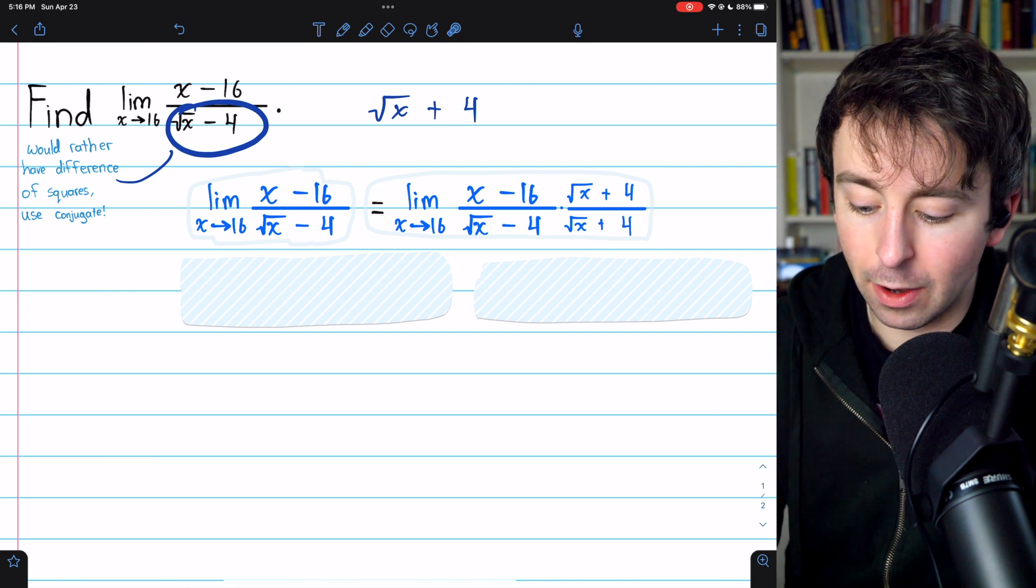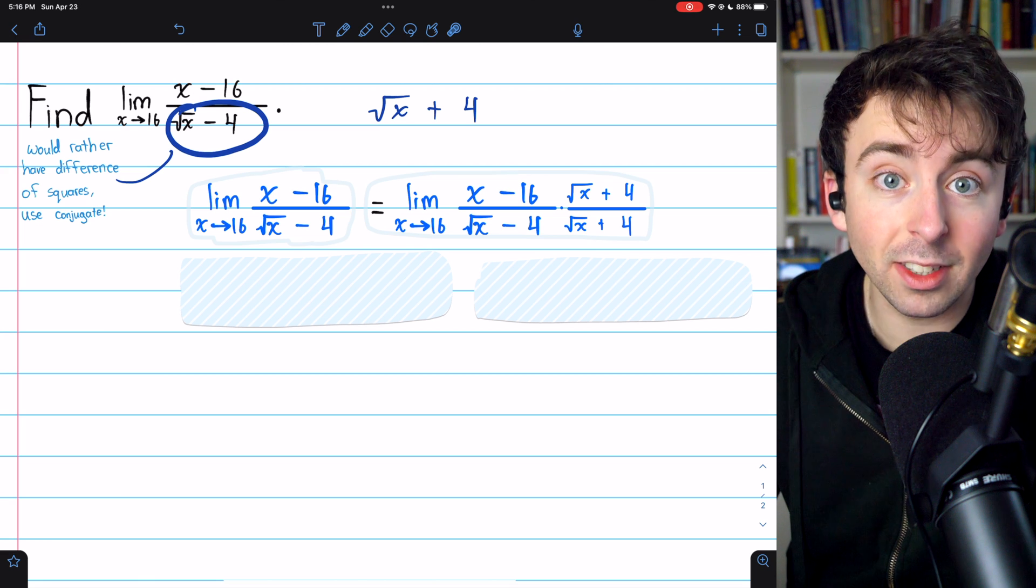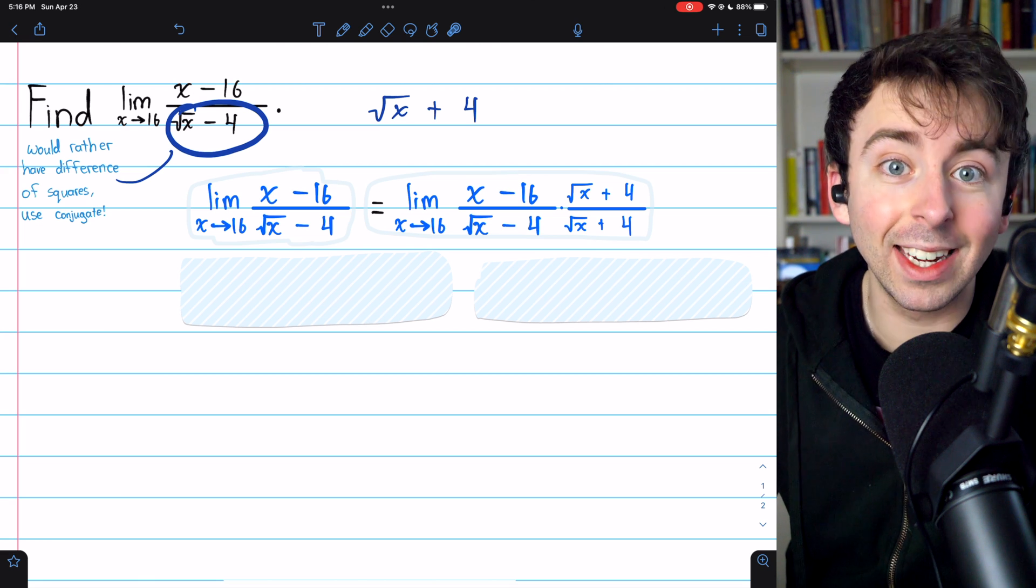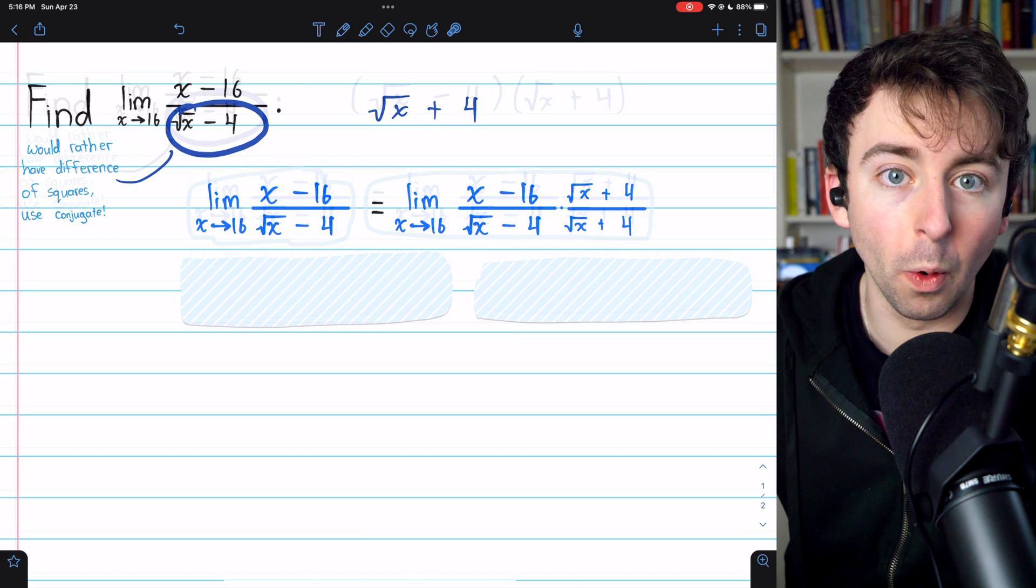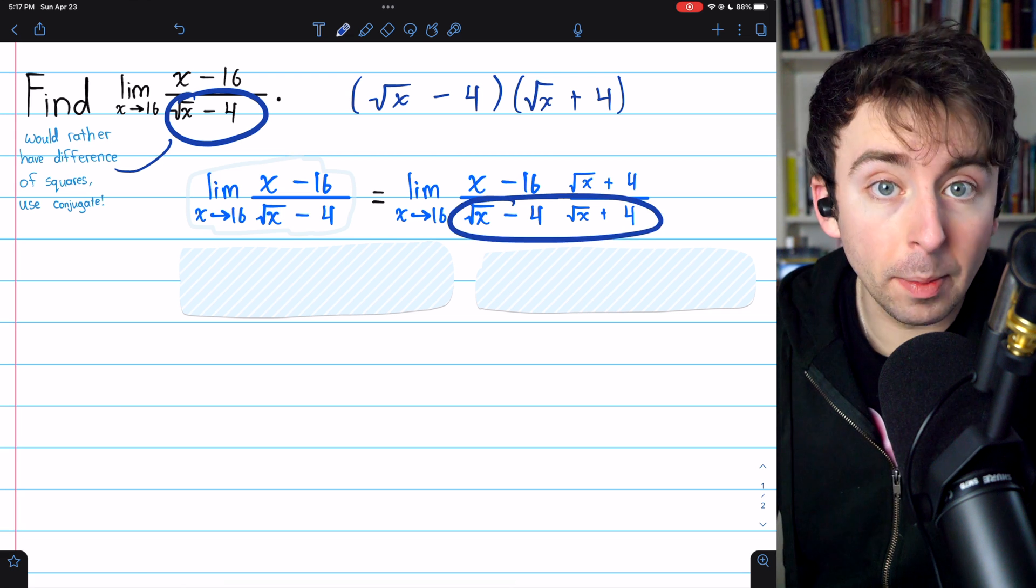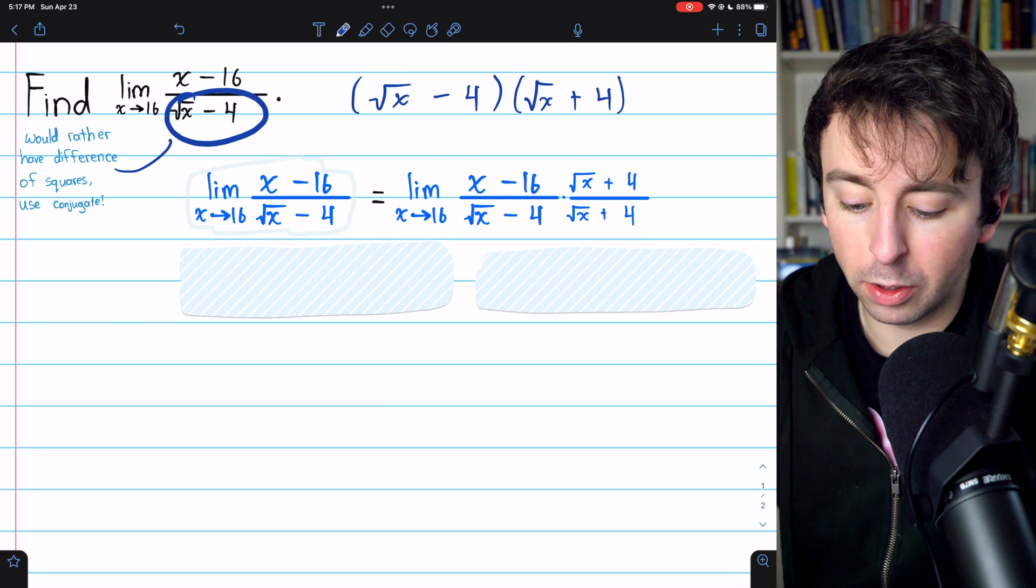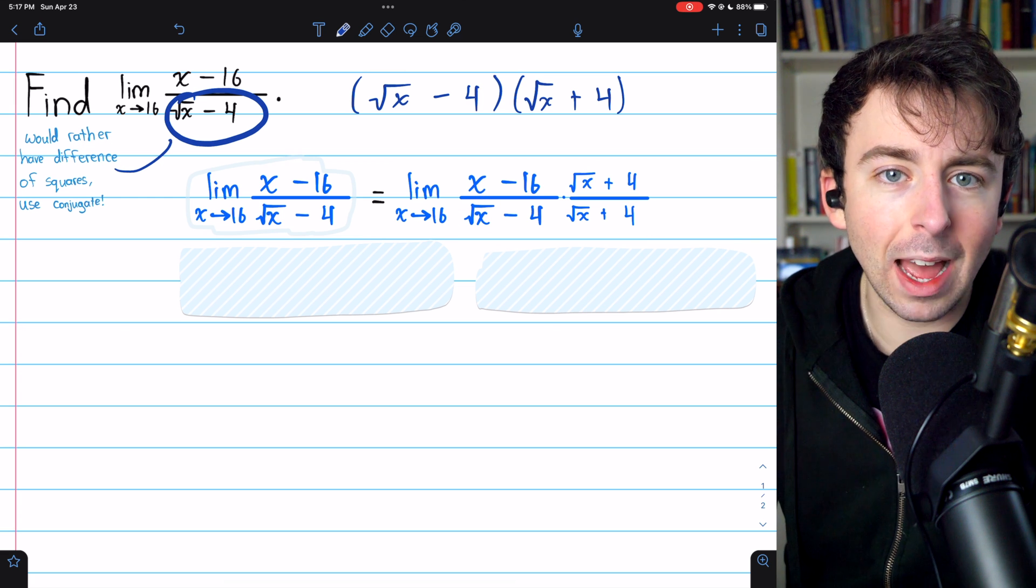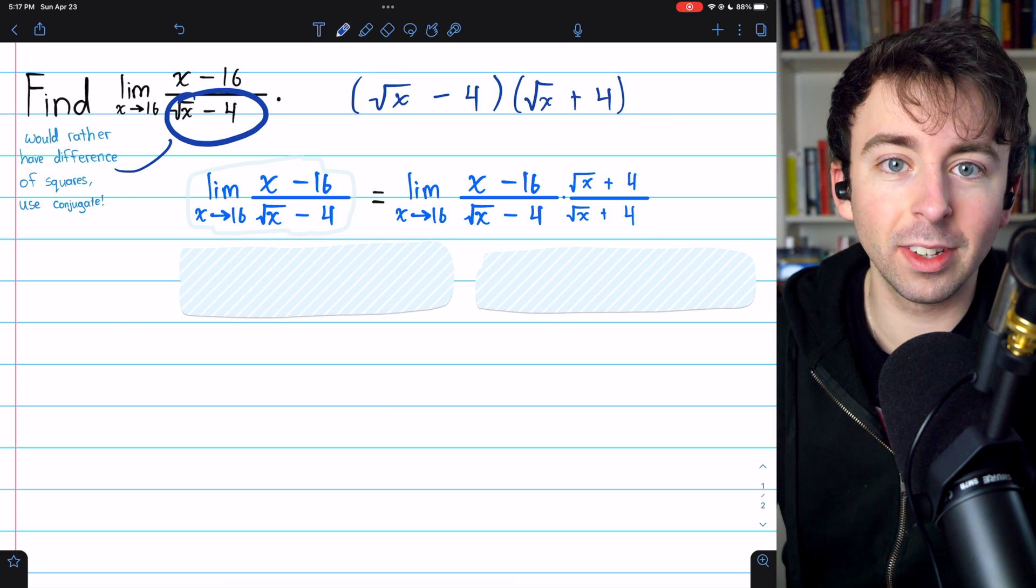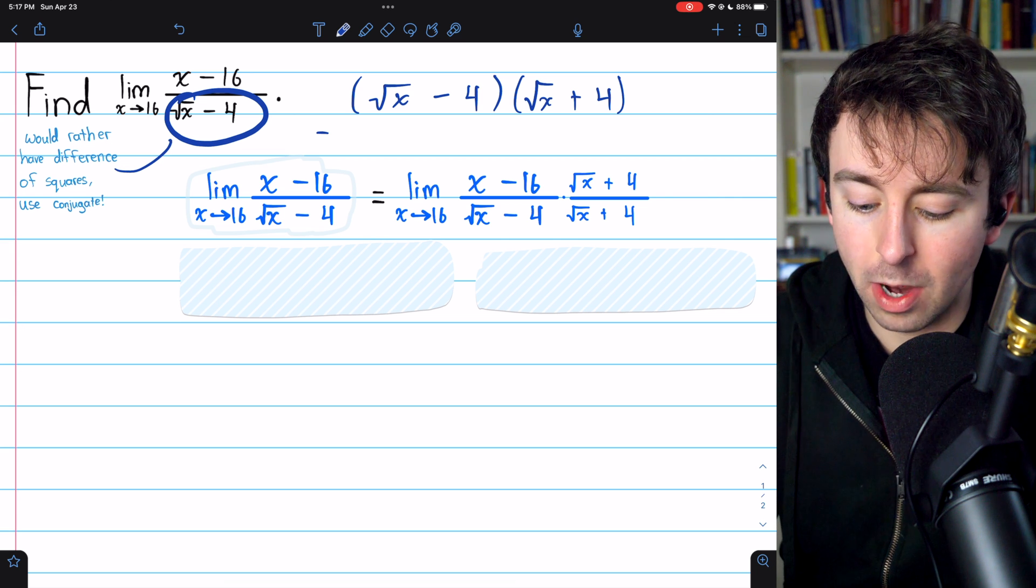This is going to clean up the denominator, and in the numerator, it's important that you remember not to distribute. It's going to be really handy to leave things in factored form. But remember, we do want to do the multiplication in the denominator here, because that's what's going to clean up the denominator. In general, you should have it memorized how the conjugate works. It's just going to give us the difference of squares. You don't really have to do out the algebra every time.